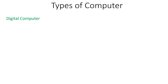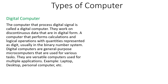Now let me tell you about the digital computer. Those computers that process the digital signals are called the digital computer. Digital signal means the discrete or discontinuous form of data in the digital form. It is a computer that performs calculations with quantities represented as digits, usually in the binary number system. So our digital computer works on the binary number system. They are general purpose micro computers used for various tasks.